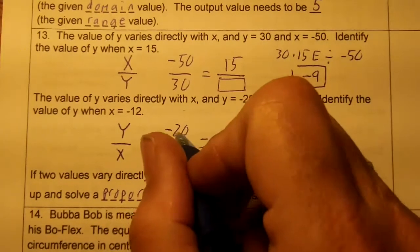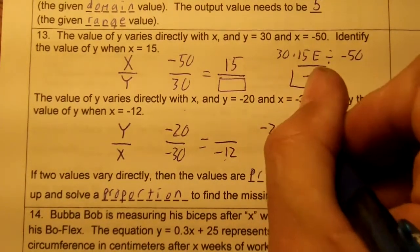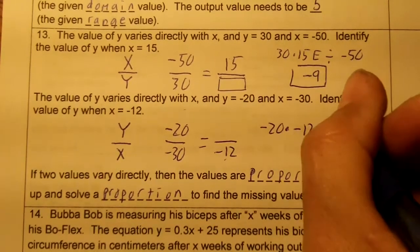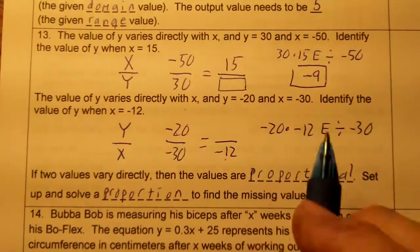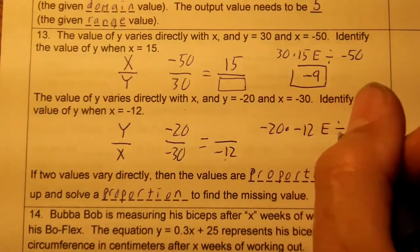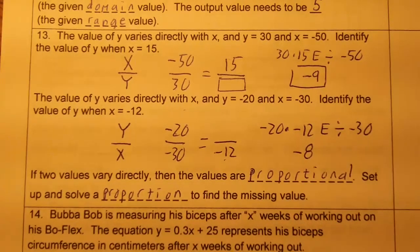Negative 10 times 12. You would hit enter, and then divide by negative 30. And you would get 8. You would get a negative 8. You would get negative 10.